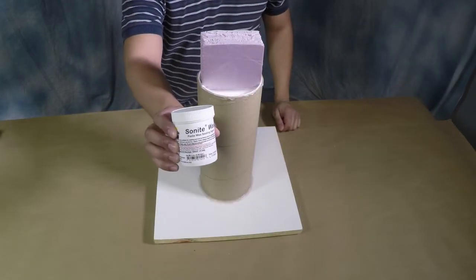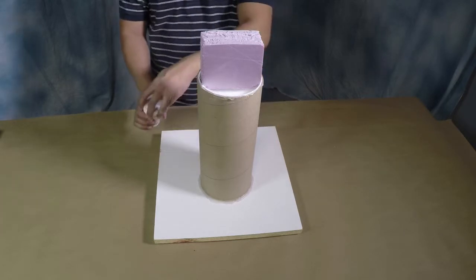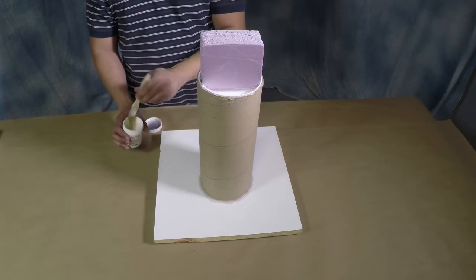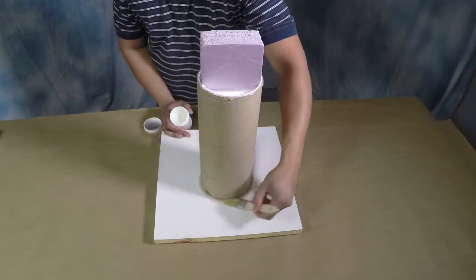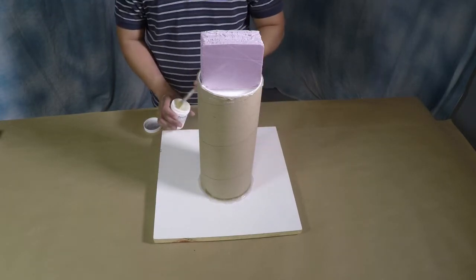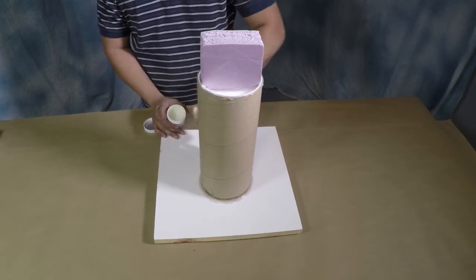Once the structure is secured onto the base board, I'm going to use Sonite wax. Now Sonite wax is a paste wax, and I'm going to spread this wax around the base of the mailing tube and across the entire surface of the melamine board. And this will help me separate the model from the board when I'm done.